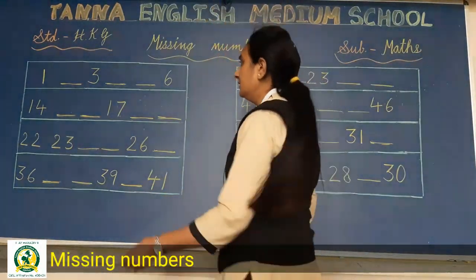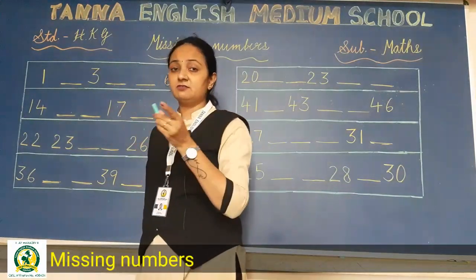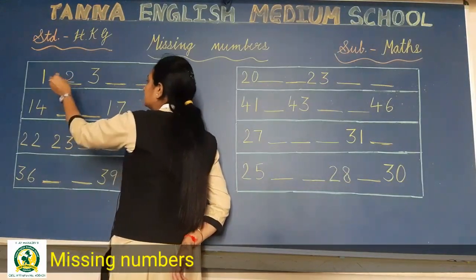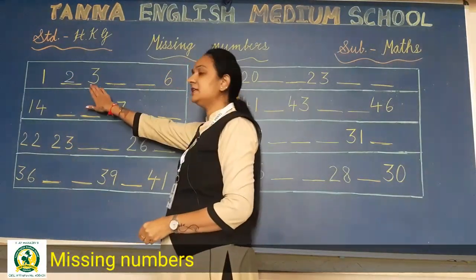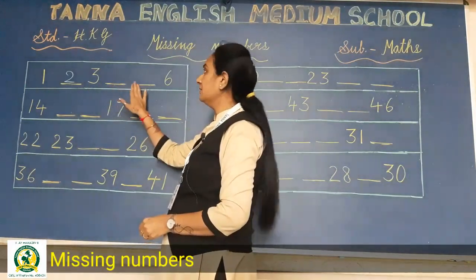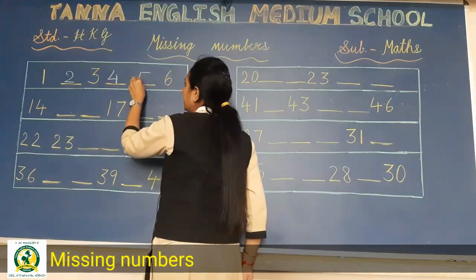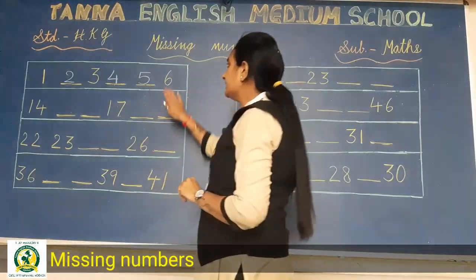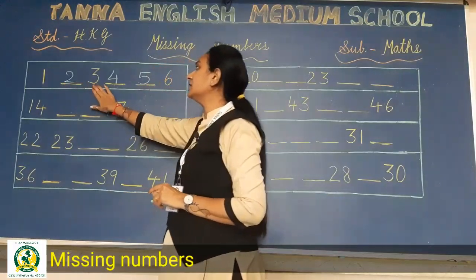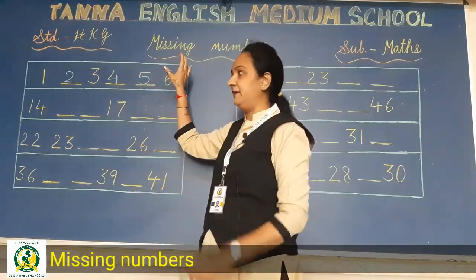So now see, here it is written 1, सबकी बुक में 1 लिखा है. तो 1 के after, 1 के बाद क्या आएगा? Yes, 2, तो write here 2. Then 3 is written, okay, तो 3 के बाद क्या आएगा? 4 and 5. So here you have to write 4 and then here write 5. फिर 6 तो लिखा हुआ है. So 1, 2, 3, 4, 5 and 6. यह लाइन पूरी complete हो गई सबकी? Very good.